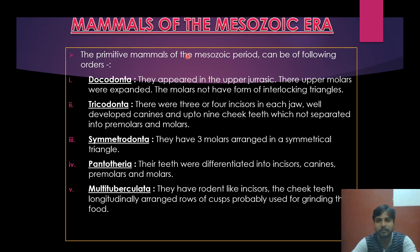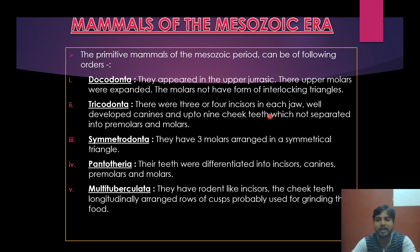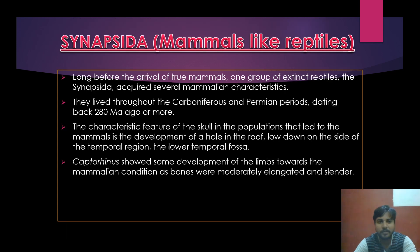Mammals are differentiated into orders on the basis of dentition: Docodonta, Tricodonta, Symmetrodonta, and Multituberculata. Docodonts appeared in the Jurassic; their upper molars expanded but did not form interlocking triangles. They had three or four incisors in each jaw, well-developed canines, and up to nine cheek teeth not separated into premolars and molars. Symmetrodonts had teeth differentiated into incisors, canines, premolars, and molars. Multituberculates had rodent-like incisors with cheek teeth in longitudinally arranged rows of cusps, probably used for grinding food.